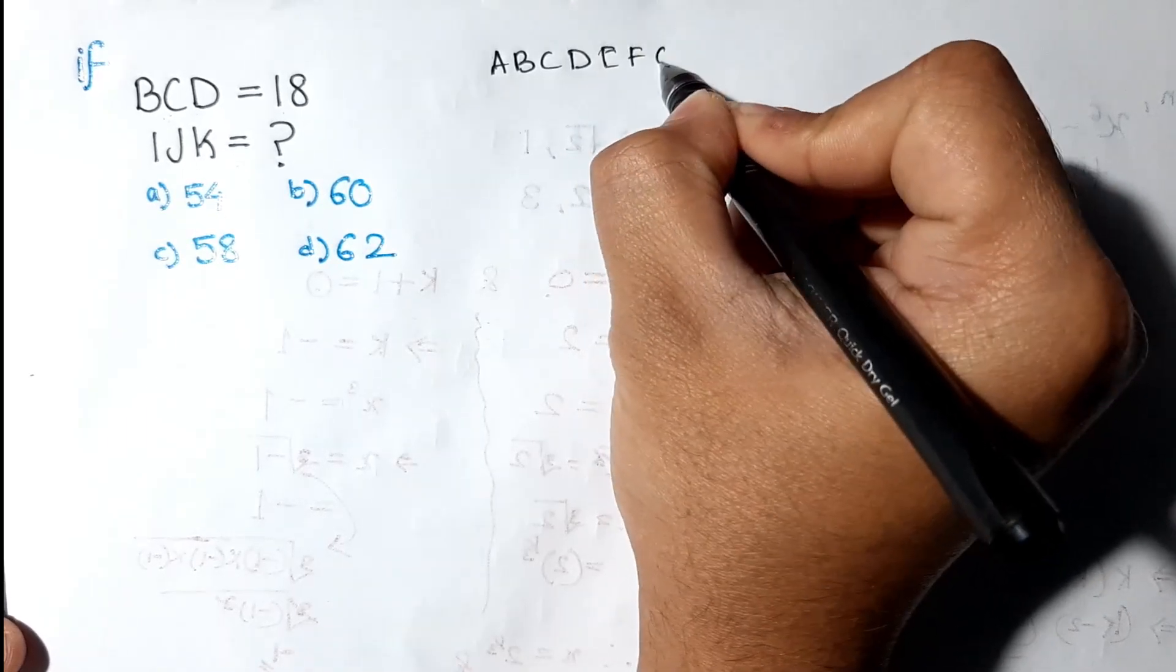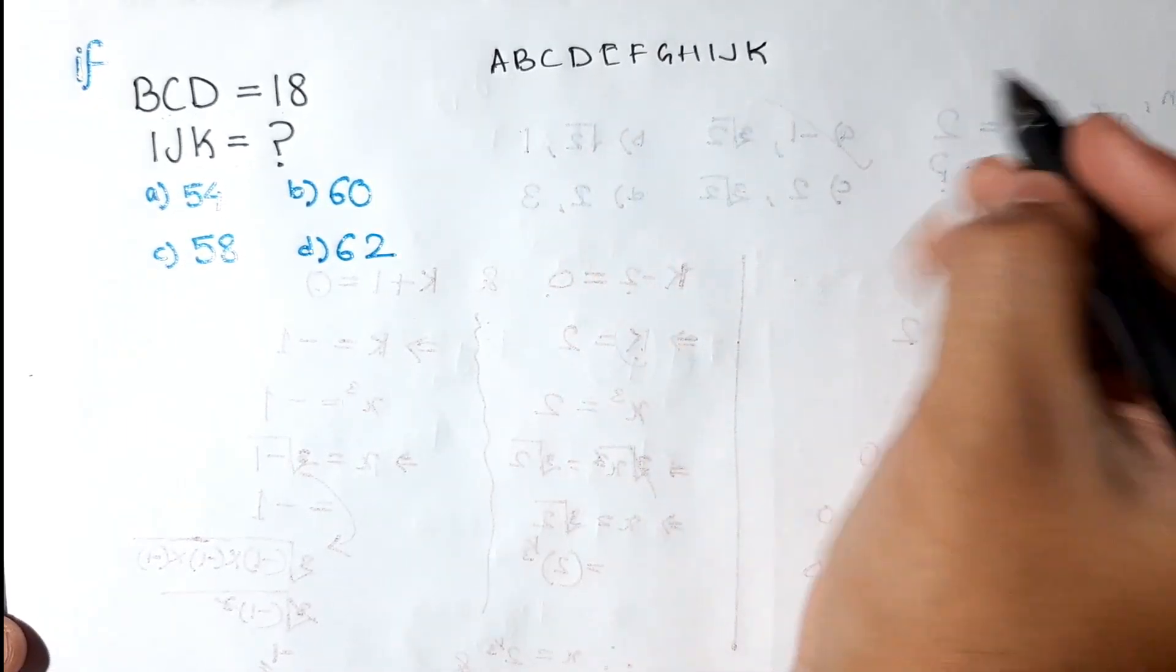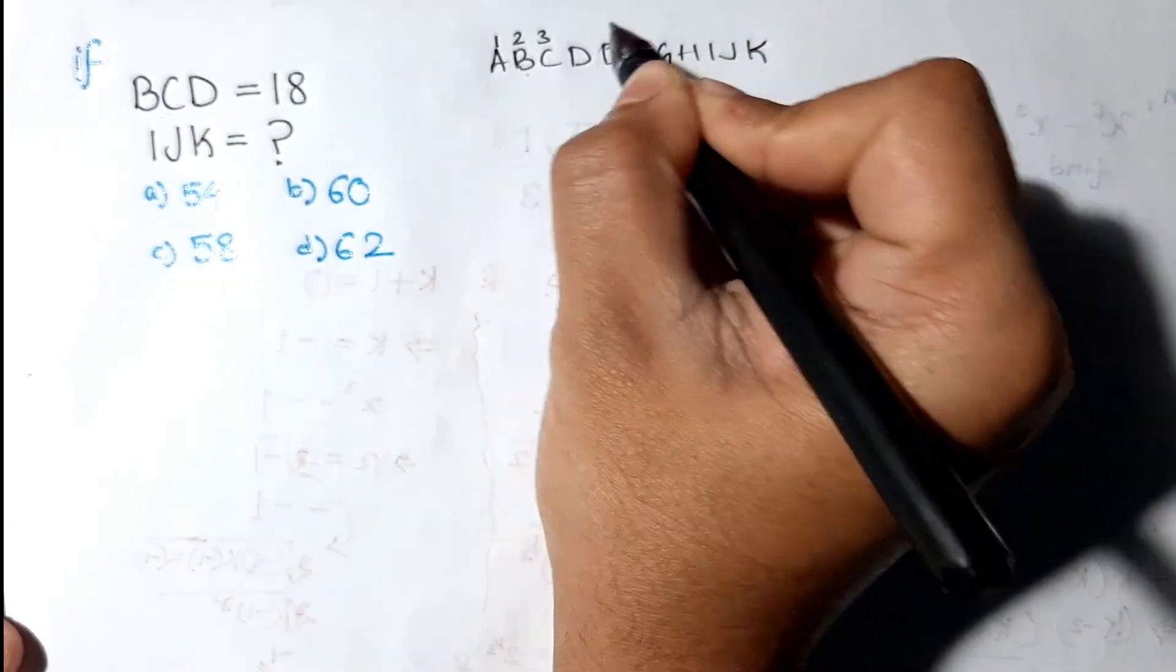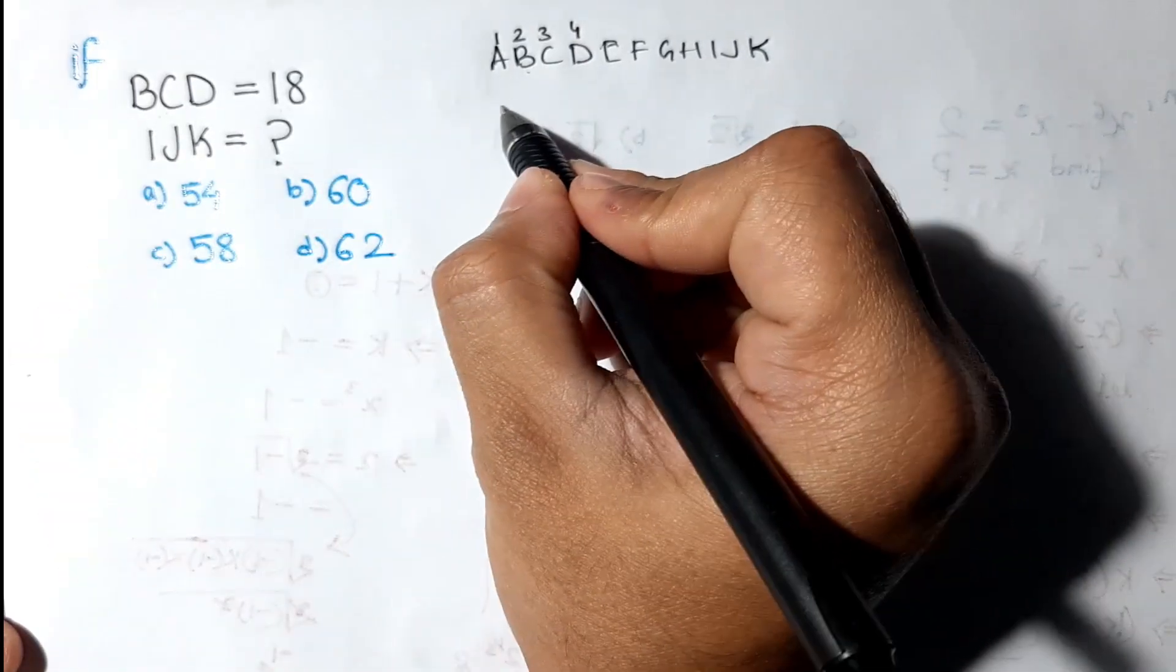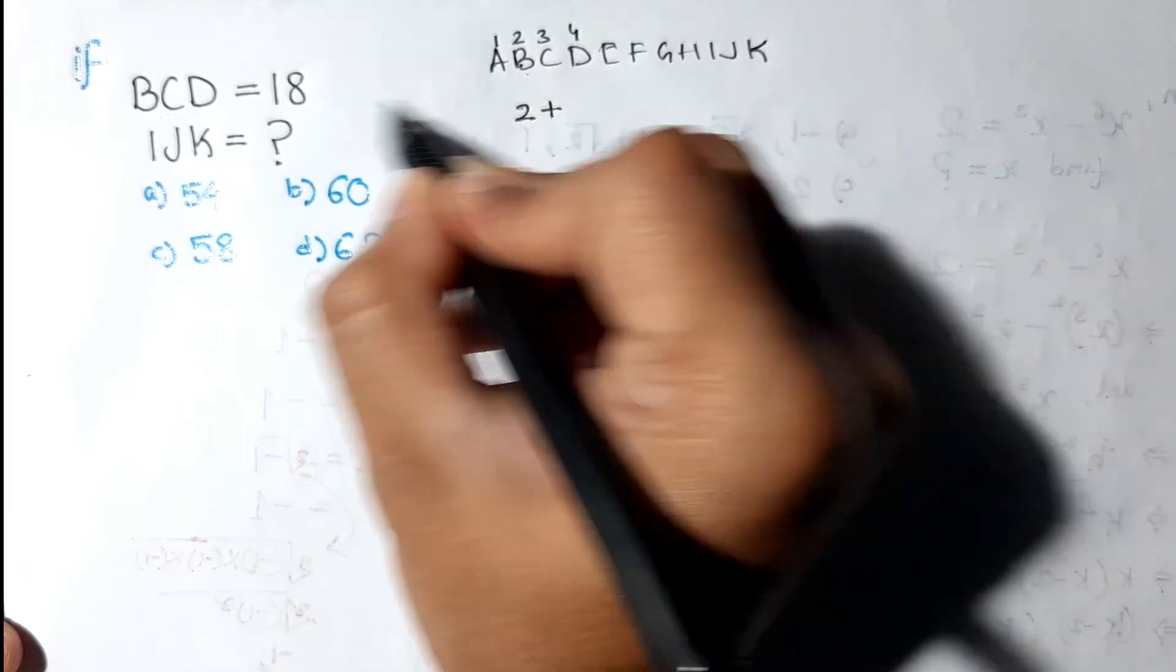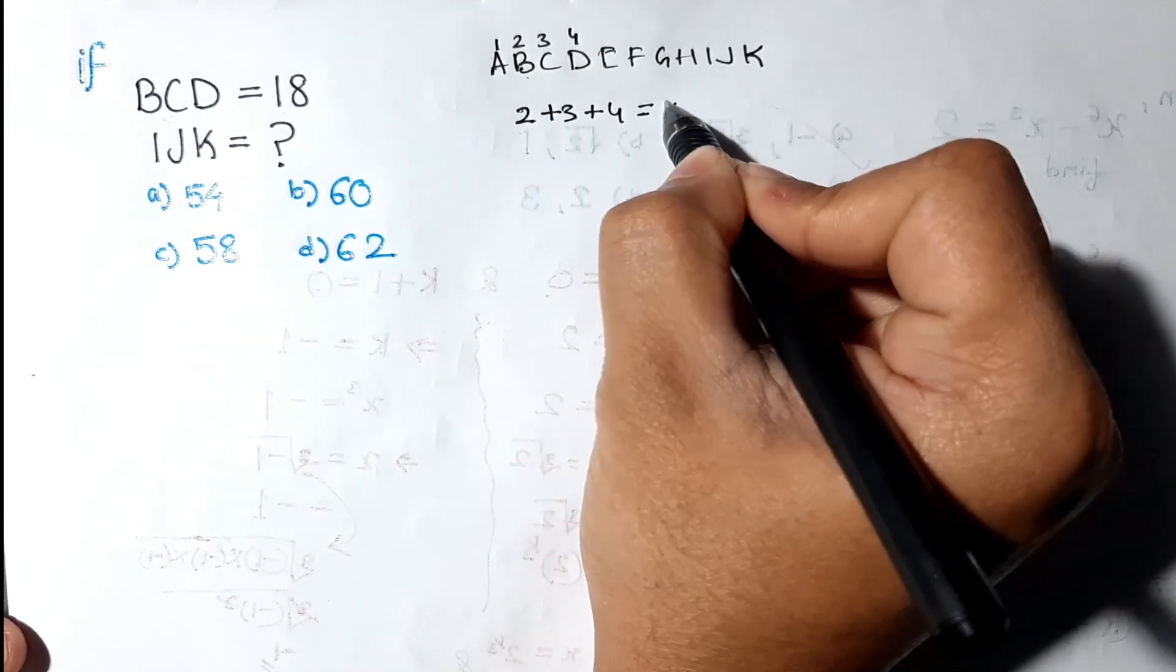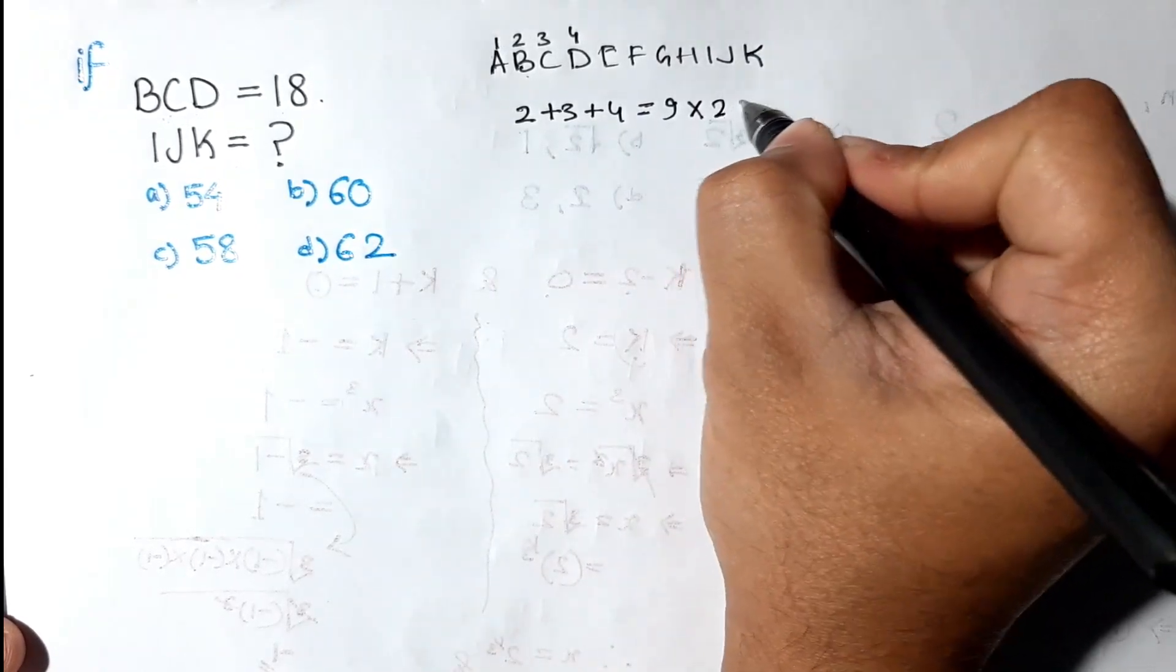A B C D E F G H I J K. B comes, A comes 1, B 2, C 3, D 4. So here is 18. BCD will be, let's say, B is 2, C is 3, and D is 4, then it will be 9. But here is 18, so if we multiply 9 with 2 we will get 18. So this is the logic behind it.